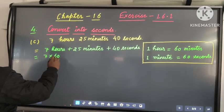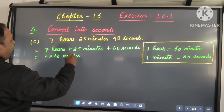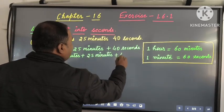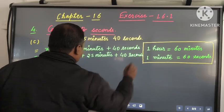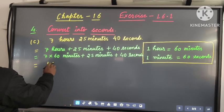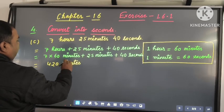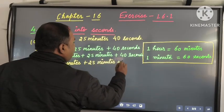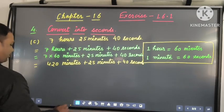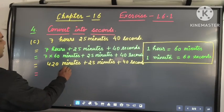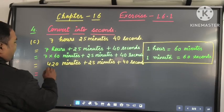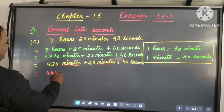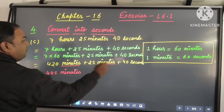So 7 hours is equal to 7 times 60 minutes, plus 25 minutes, plus 40 seconds. 7 times 60 gives 420 minutes. Then 420 minutes plus 25 minutes equals 445 minutes, plus 40 seconds.